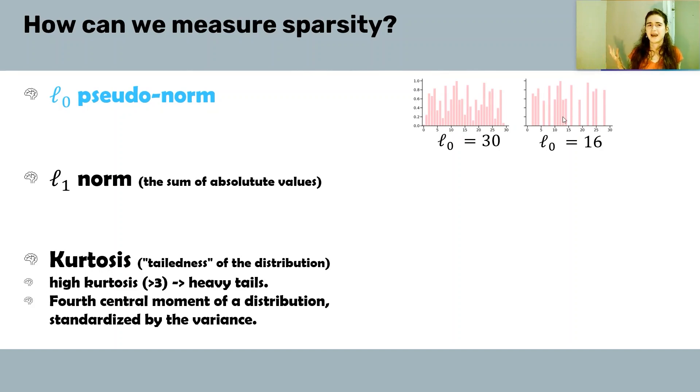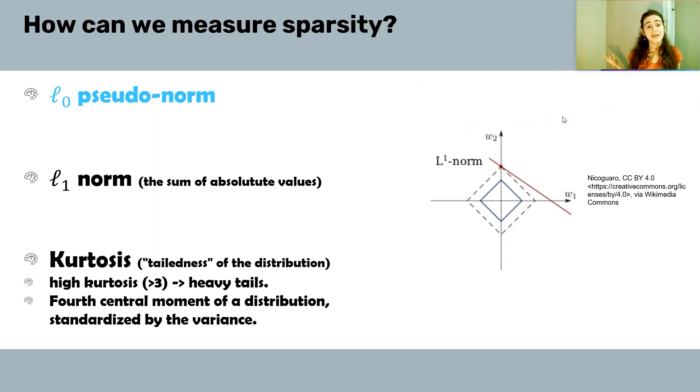However, L0 is very hard to work with, and that's why we have L1, the L1 norm, as an approximation of the L0 pseudo-norm. The L1 norm is basically the sum of absolute values of a signal. Because it's convex, it's much easier to work with.